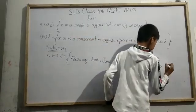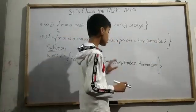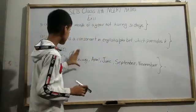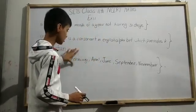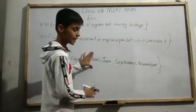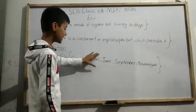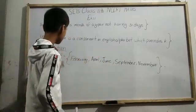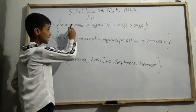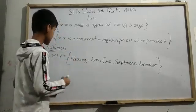December has 31 days, so we skip it. So the set E equals {February, April, June, September, November}. These are all the months of the year which do not have 31 days, and they are the elements of set E. This is the answer for question number 5.